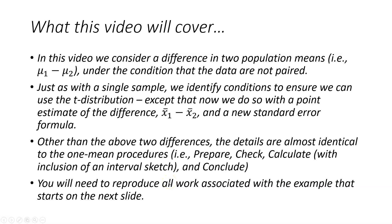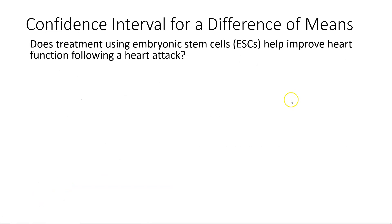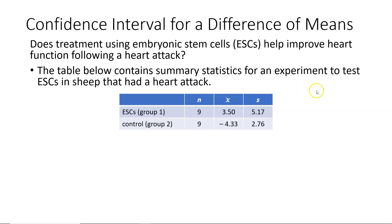You will need to reproduce all work associated with the example that starts on the next slide. The following example is drawn from section 7.3 in your textbook. The question asks, does treatment using embryonic stem cells (ESCs) help improve heart function following a heart attack? The table below contains some summary statistics for an experiment to test ESCs in sheep that had a heart attack.